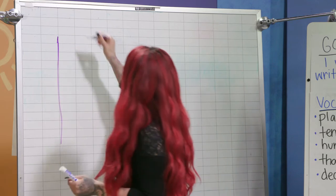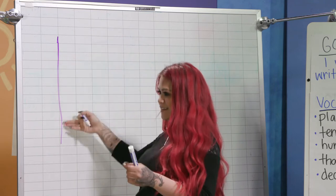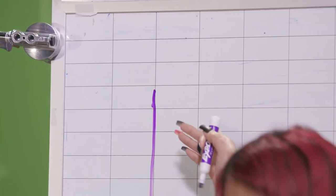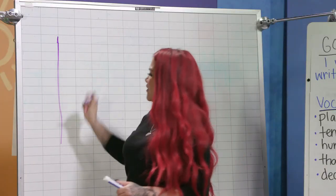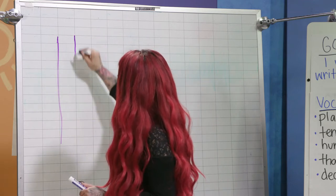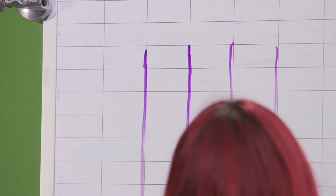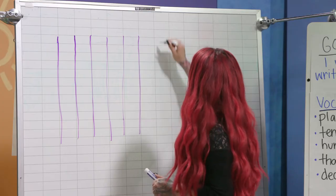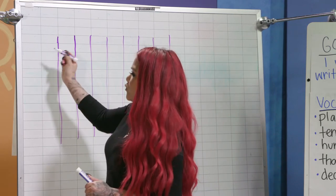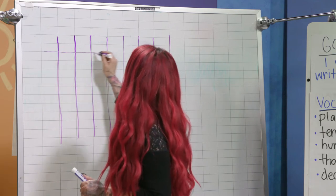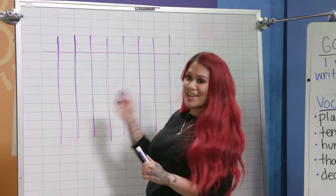Let's make our chart. What type of line is this? This is a vertical line. When I think of vertical, I think of a roller coaster going up and down. Everyone say: vertical! So I'm making my vertical lines — it's okay if it's not perfect. And then what type of line is this? Horizontal lines.